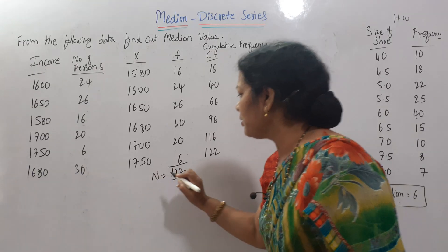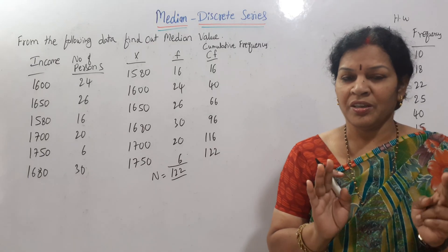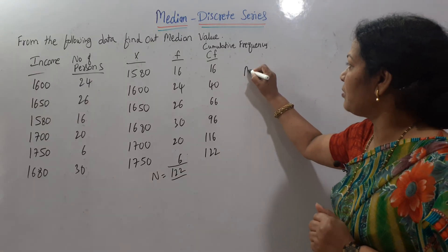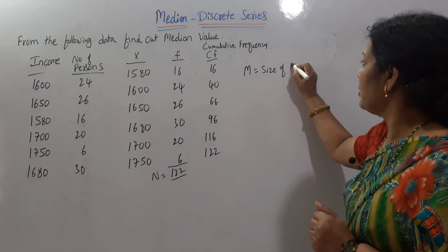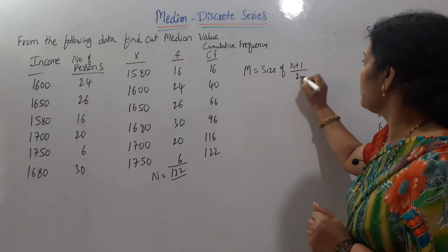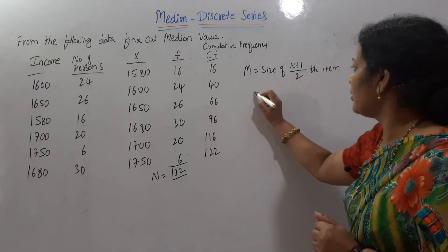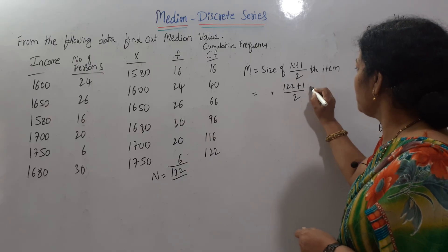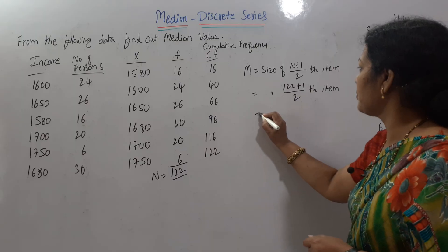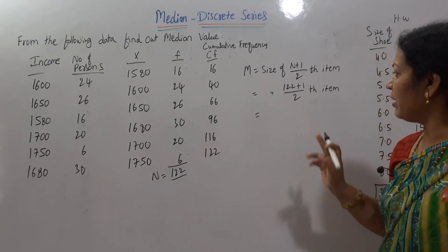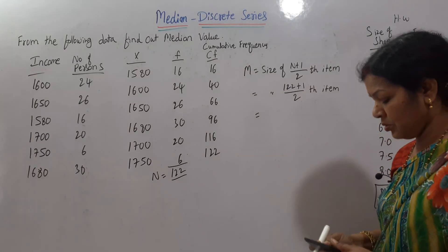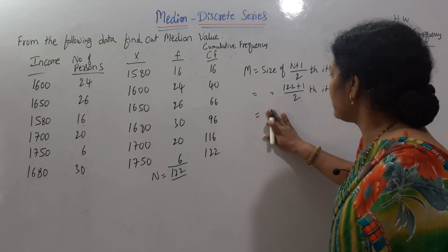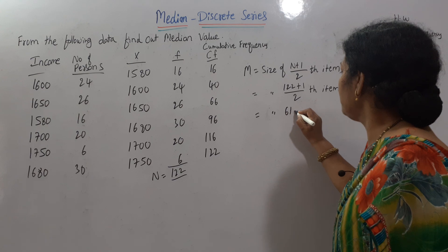Now the next step is to apply the formula. Median equals the size of (n+1)/2 th item. What is n here? 122. So it is the size of (122+1)/2 th item. 122 plus 1 equals 123; 123 divided by 2 equals 61.5. So we need the size of the 61.5th item.